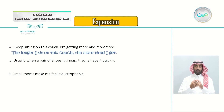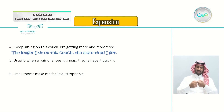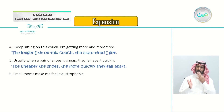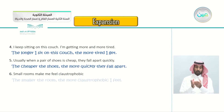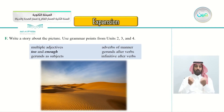Number three: when a joke is really funny, people laugh really hard — the funnier the joke, the harder people laugh. We use the comparative form: 'the funnier', 'the harder'. Number four: I keep sitting on this couch, I'm getting more and more tired — the longer I sit on this couch, the more tired I get. Number five: when shoes are cheap, they fall apart quickly — the cheaper the shoes, the more quickly they fall apart. Number six: small rooms make me feel claustrophobic — the smaller the room, the more claustrophobic I feel.